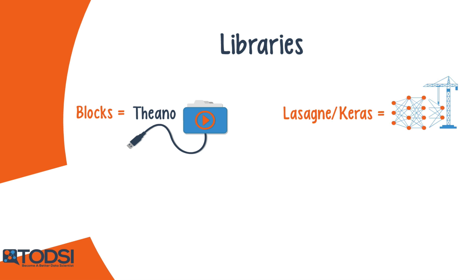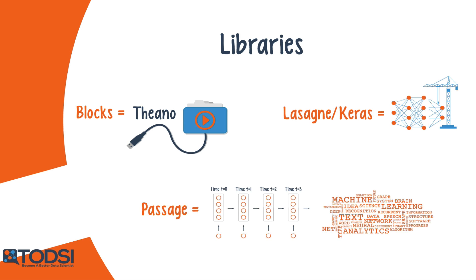Niche libraries like Passage are suited for text analysis applications that require a recurrent net.